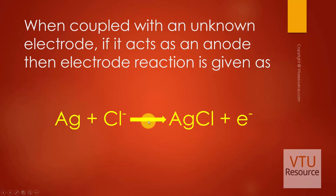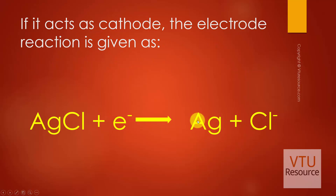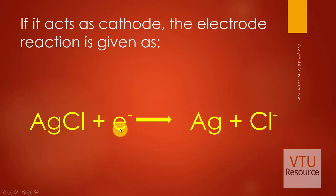The anodic reaction is oxidation: silver undergoes oxidation to give Ag⁺ and an electron, and the Ag⁺ reacts with Cl⁻ to give AgCl. If the Ag/AgCl electrode acts as a cathode, the electrode reaction is: AgCl + e⁻ → Ag + Cl⁻. The cathodic reaction is reduction: silver in the form of Ag⁺ accepts one electron and undergoes reduction to give Ag.